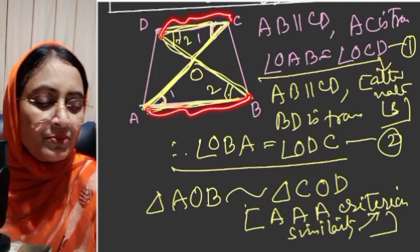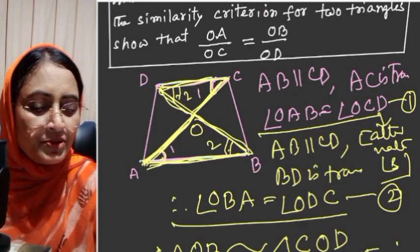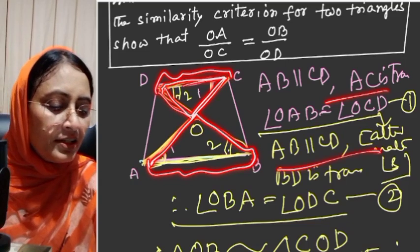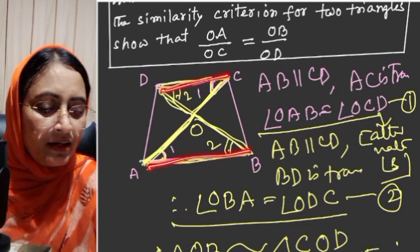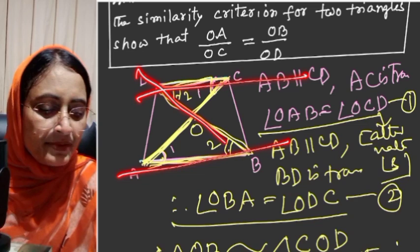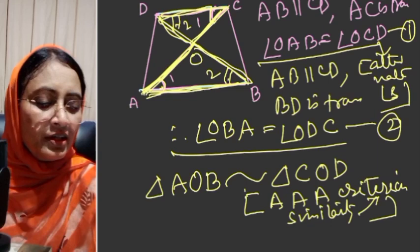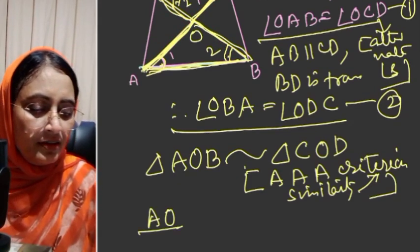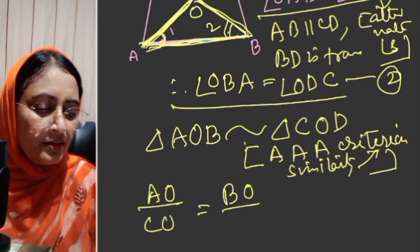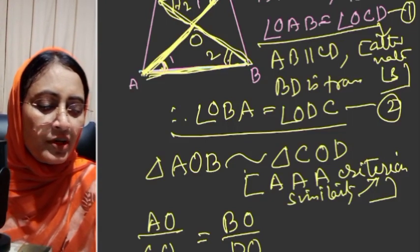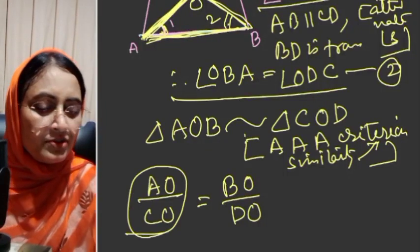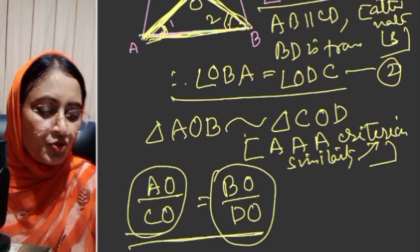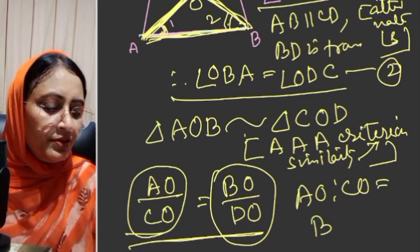In a trapezium, when two sides are parallel and we have a transversal, the alternate angles are equal. Therefore, corresponding sides are proportional. That means AO by CO is equal to BO by DO. So corresponding sides are proportional: AO is to CO is equal to BO is to DO.